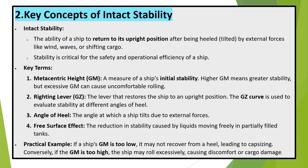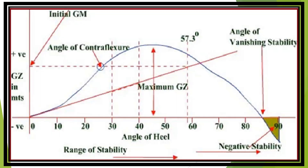Key concepts of intact stability. Intact stability is the ability of a ship to return to its upright position after being heeled or tilted by external forces like wind, waves, or shifting cargo. Stability is critical for the safety and operational efficiency of a ship. Key term — Metacentric Height (GM): a measure of a ship's initial stability. Higher GM means greater stability, but excessive GM can cause uncomfortable rolling.